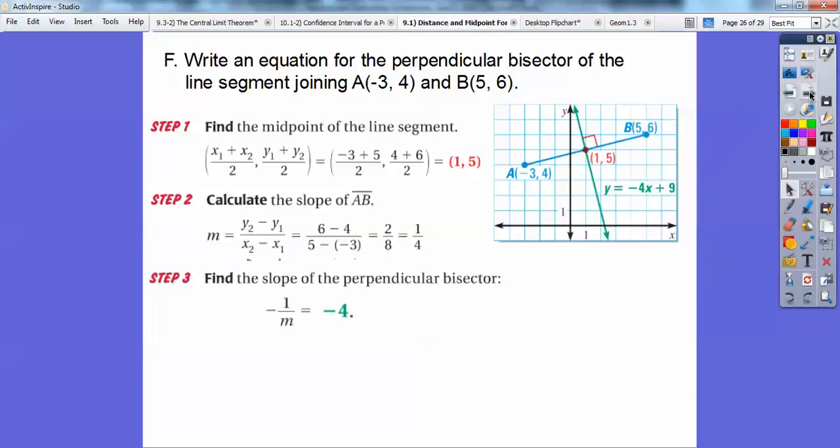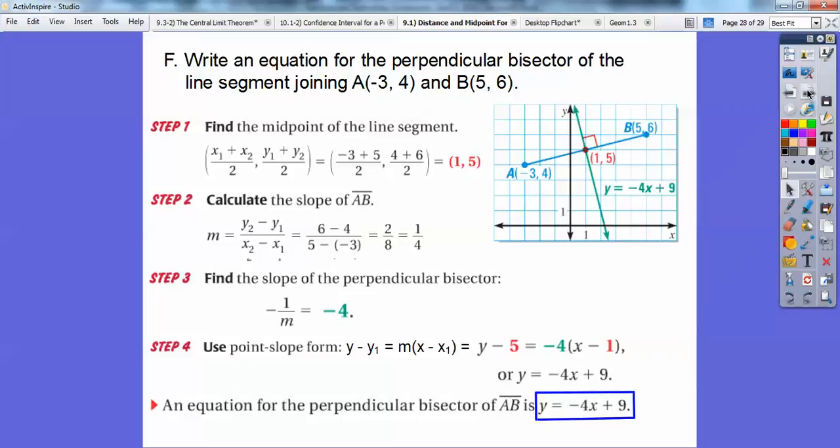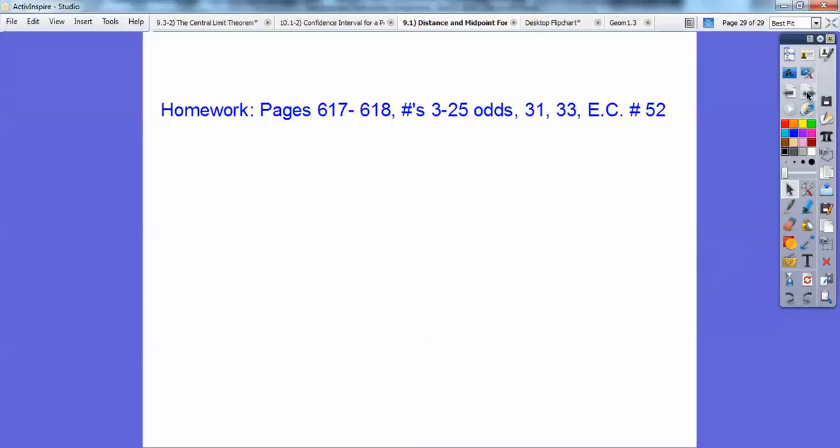Okay, so a perpendicular slope of 1 fourth is going to be negative 4. So that's where this negative 4 comes in right there. And then you can do Y equals MX plus B. I'm choosing to do point slope form because you guys don't see it that much. And it's really easy, you guys. Point slope form is Y minus Y sub 1 equals M times X minus X sub 1. And then just substitute in this for X sub 1 and this for Y sub 1 right here. So this 5 goes here. This 1 goes here. And then when you clean it up, you get this is my answer right there. So the line that's perpendicular bisector of line segment AB is Y equals negative 4X plus 9. You can do that, you guys. Don't get so scared about that one. You can do that.